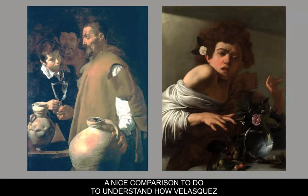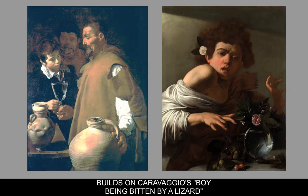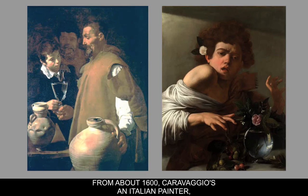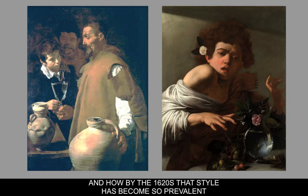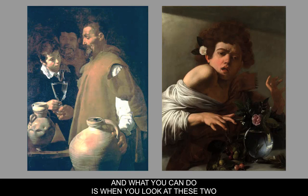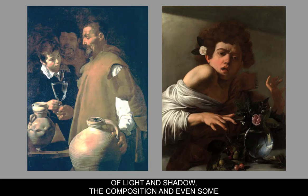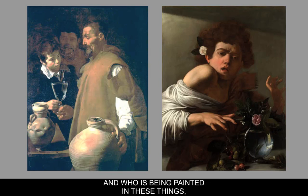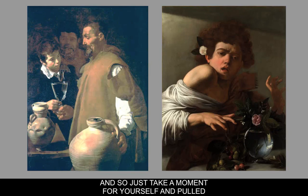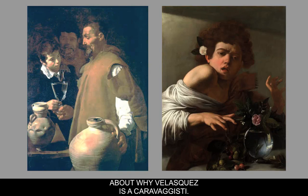A nice comparison to understand how Velázquez builds on Caravaggio is to look at Caravaggio's Boy Being Bitten by a Lizard from about 1600 alongside Velázquez's work, showing how by the 1620s that style had become prevalent. When you look at these two paintings, consider the chiaroscuro, the tenebrism, the patterns of light and shadow, the composition, and even why those little vessels of water are painted and who is depicted. You'll see Velázquez has a slightly different attitude toward painting than Caravaggio. Pull both paintings up and spend some time comparing and contrasting — you'll reach your own conclusions about why Velázquez is a Caravaggist.